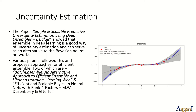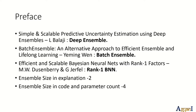This paper was followed by Batch Ensemble and Rank-1 BNN, which attempt to make ensembles more parameter-efficient, because a single deep neural network already has a huge number of parameters. These two papers attempt to minimize the number of parameters for ensemble members. Going forward: the first paper we'll call Deep Ensemble, the second Batch Ensemble, and the third Rank-1 BNN. In the slides I use an ensemble size of 2, and in the code an ensemble size of 4.